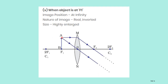When an object is at F1: the image position is at infinity. One ray is parallel to the principal axis — after hitting the refracting surface it passes through the focus. Another ray passing through the optic center follows the same path. These two rays will not meet in front of the lens — they will meet at infinity. Therefore, the image forms at infinity. Nature of the image is real and inverted; size of the image is highly enlarged compared to the object.